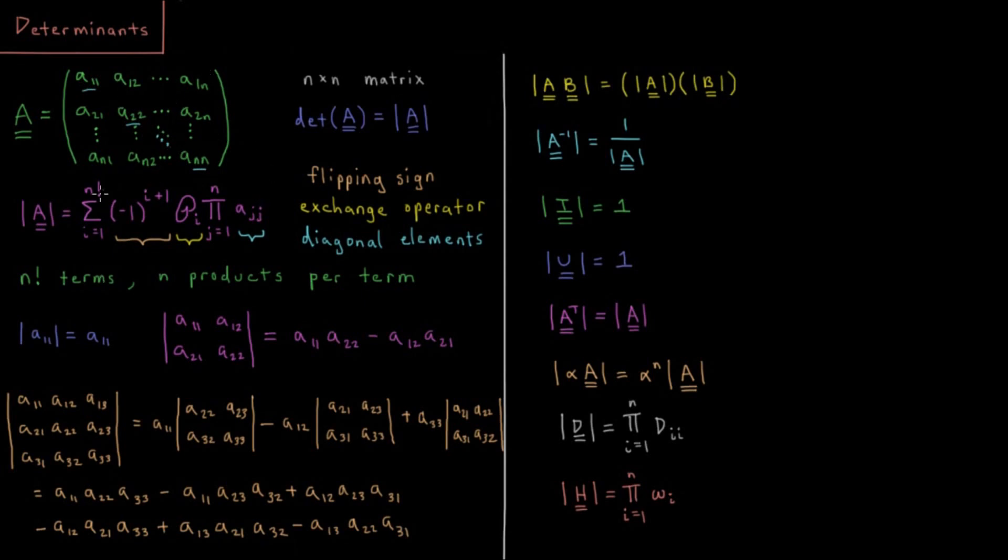The determinant of matrix A is equal to a sum from i equals 1 to n factorial, remember n factorial being a function where you multiply by every integer all the way down to 1. So 5 factorial, 5 times 4 times 3 times 2 times 1 will be 120. So this is a very quickly increasing function. It's increasing exponentially quickly.